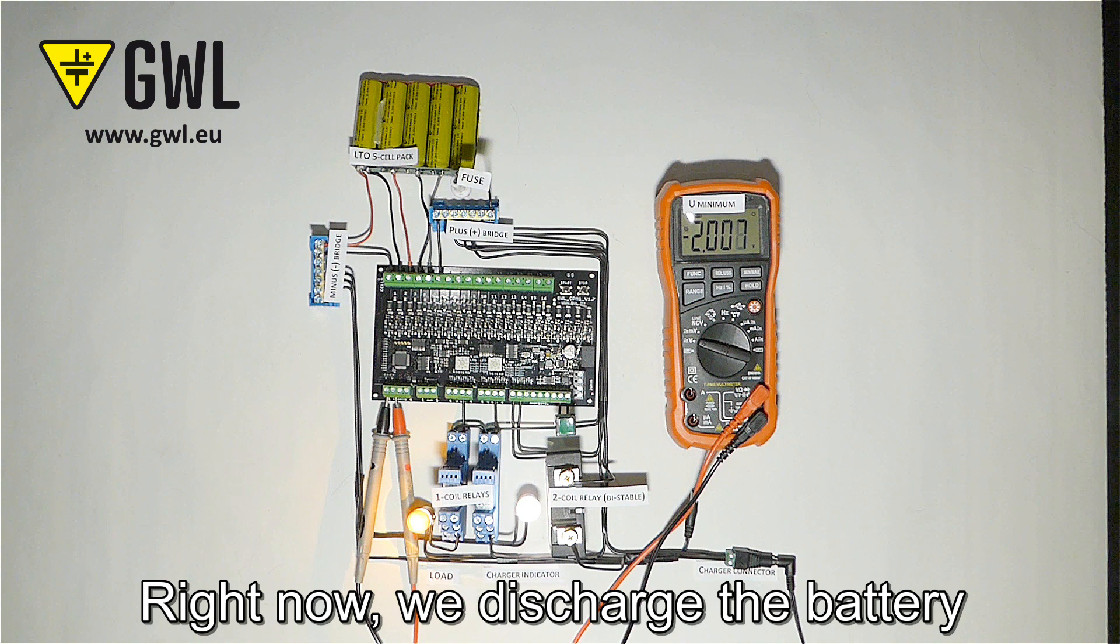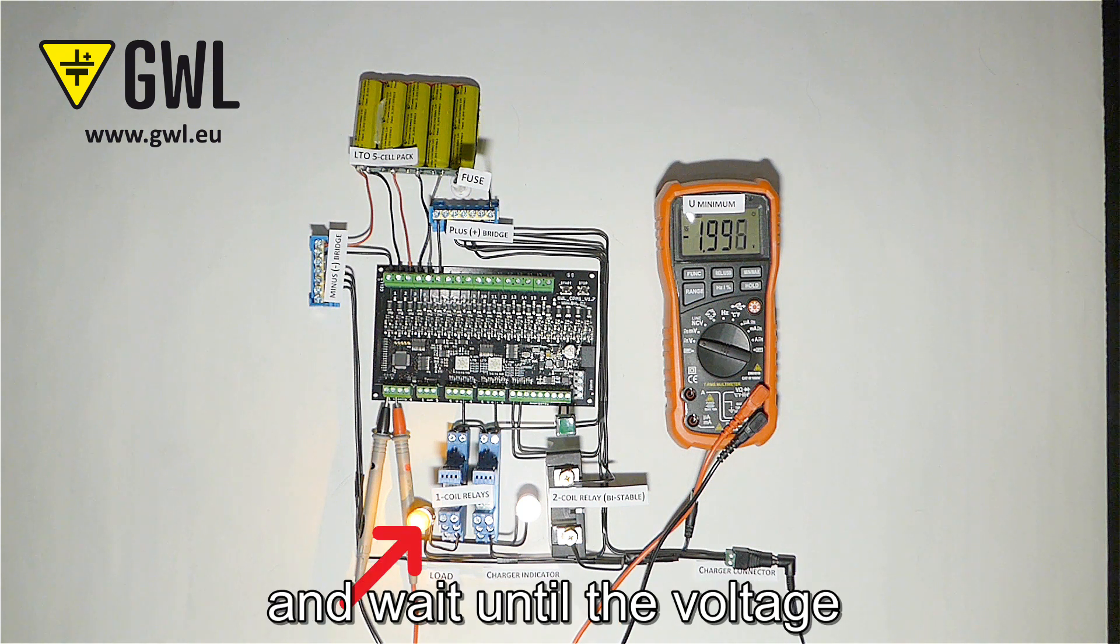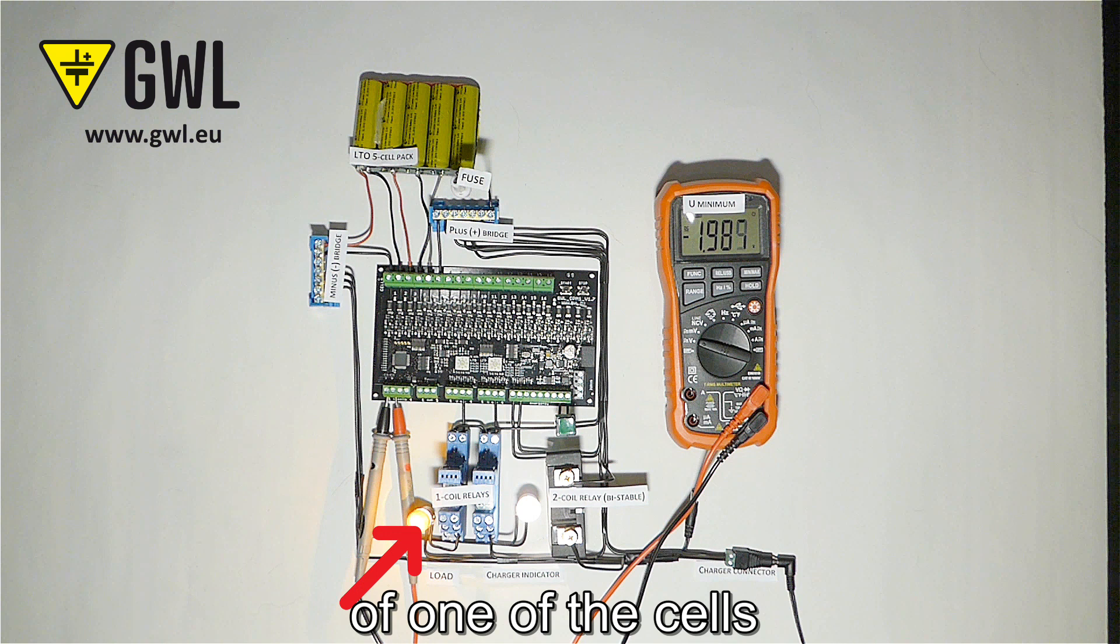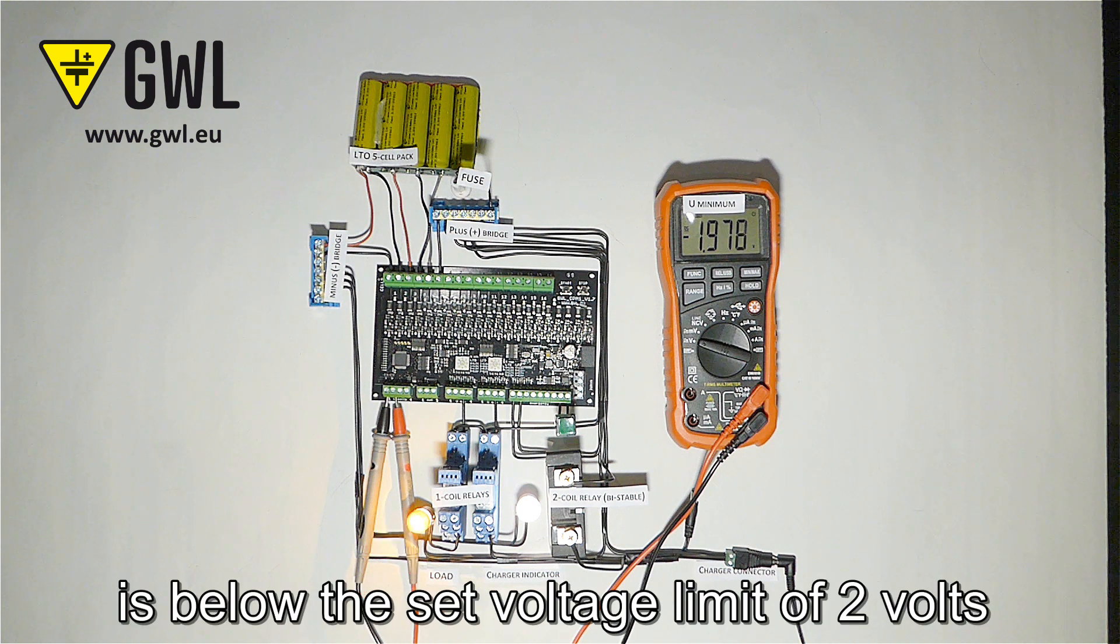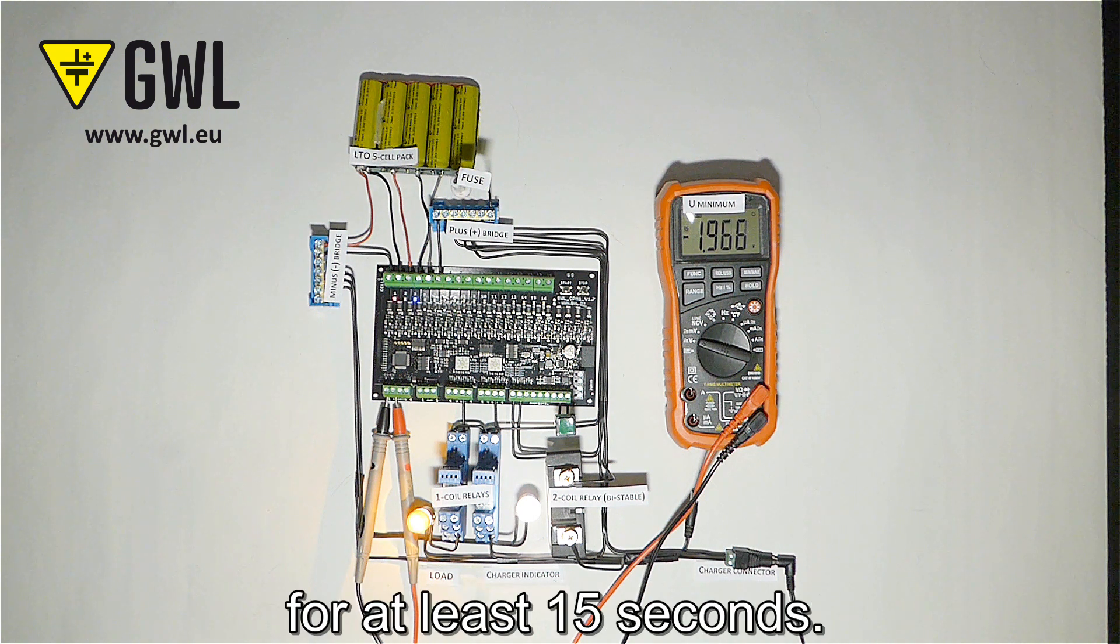Right now we discharge the battery with a yellow light bulb and wait until the voltage of one of the cells is below the set voltage limit of 2 volts for at least 15 seconds.